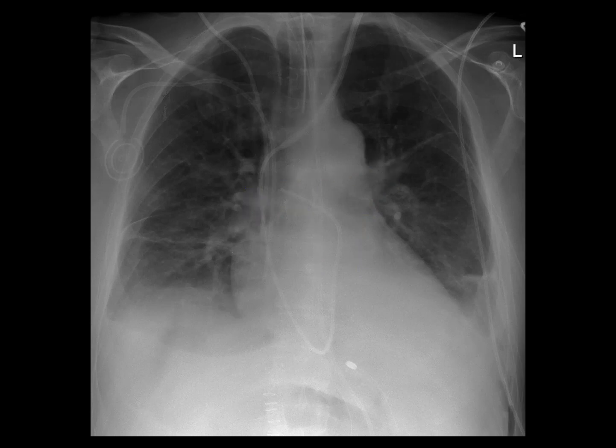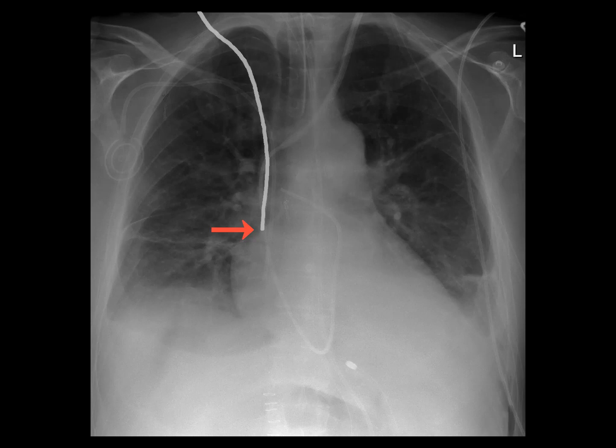This patient has three separate central venous catheters, including a subclavian portacath with tip in the right atrium, a non-tunneled right IJ central venous catheter with tip at the right atrial superior vena cava junction, and a Swan-Ganz catheter passing through the left internal jugular vein through a sheath.